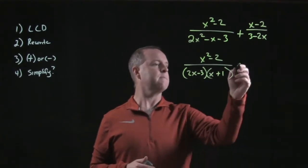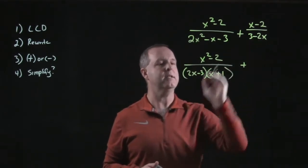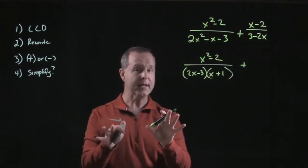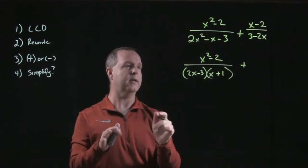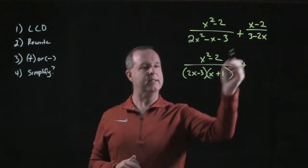On the other side I have x - 2 and 3 - 2x. Before we get too far down the road, you recognize that 3 - 2x and 2x - 3 are just offset by a factor of negative 1.